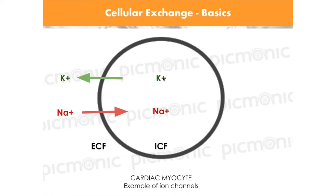Electrolytes move in and out of cells continuously. The ICF is intracellular volume inside the cell, and ECF is outside the cell — so inside of cardiac tissue the ICF exists, while outside the cell may be the actual blood flowing past those tissues. That's the big picture concept of how you need to visualize this.